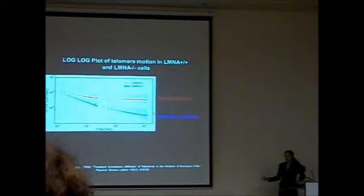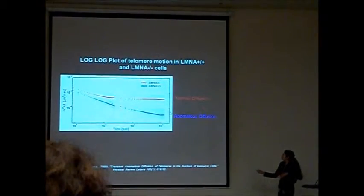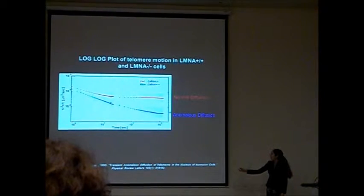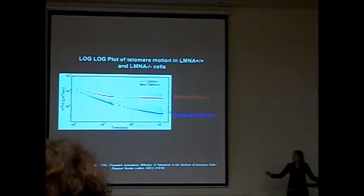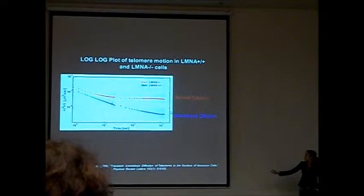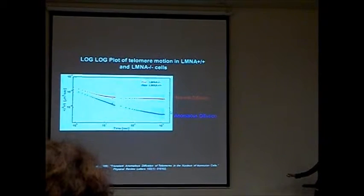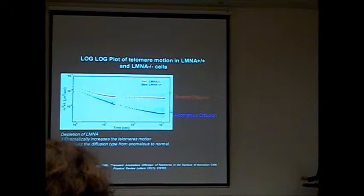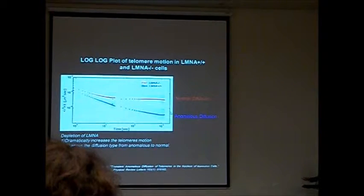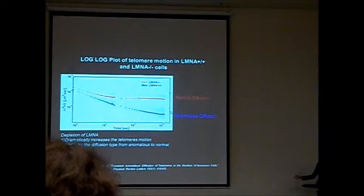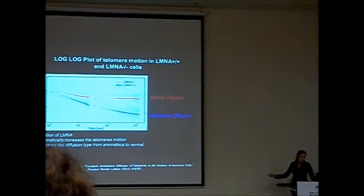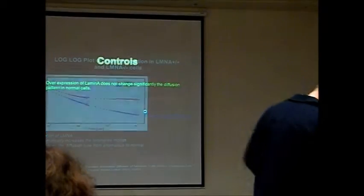But to our surprise and to our luck, we found the normal diffusion for cells that do not have lamin A protein, since the curve is going like parallel to axis of time. So we can conclude that lamin A depletion not only increased telomere motion, you can also see it from the graph, since this curve is much higher than this one, but also changed the type of diffusion back to normal.